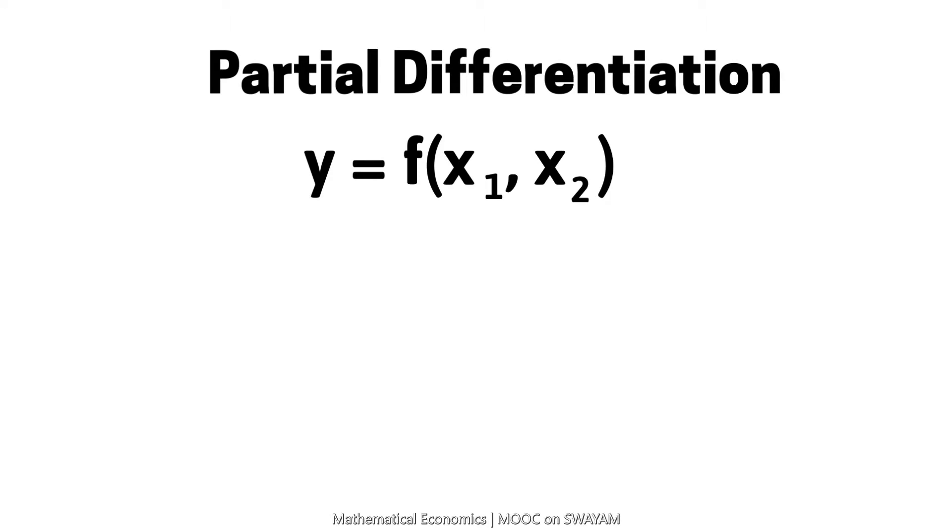If this is the function where y is the dependent variable and x1 and x2 are the independent variables, the effect of x1 on y is given by del y by del x1. Note that we now use the symbol del. This term is called the partial derivative of y with respect to x1.